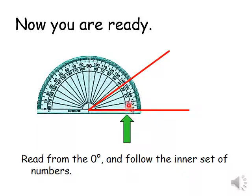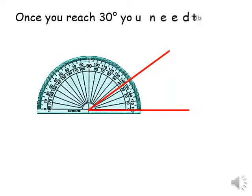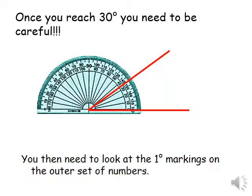After we put the protractor correctly with the vertex aligned, we start reading from 0. Counting: 0, 10, 20, 30 — it's between 30 and 40, so the measure of this angle is 35 degrees.